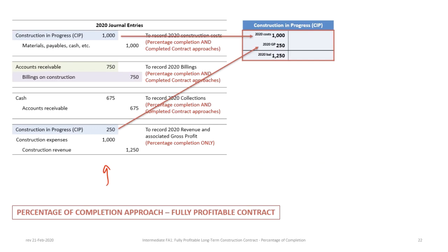Here is the complete set of journal entries. The Construction in Progress account is a balance sheet account — our first entry records 2020 costs of $1 million. The entries are color-coded: Construction in Progress is always blue. The gross profit entry also impacts Construction in Progress, so the account reflects costs plus gross profit, which equals the revenue to date on the contract.